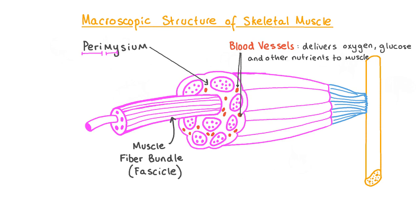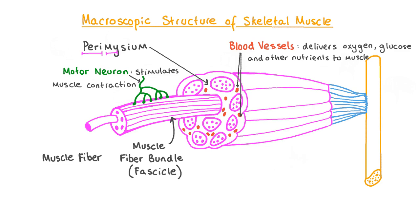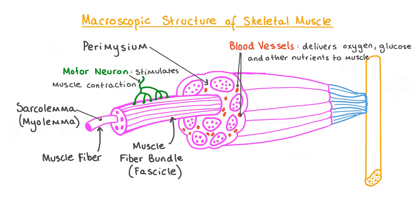Blood brings oxygen, glucose and other nutrients to the muscle cells to allow them to respire, release energy, grow and repair themselves. Motor neurons are nerve cells that carry out the important function of stimulating muscle contraction. Each skeletal muscle fiber is one very long cylindrical muscle cell enclosed within a plasma membrane called the sarcolemma. The prefix sarco comes from the Greek word for flesh, and the suffix lemma comes from the Greek word for sheath, as it forms a protective membrane around each fiber. The sarcolemma is sometimes also called the myolemma.